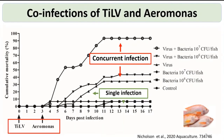In the lab, we took naive fish and challenged them with bacteria alone, virus alone, or together, using different bacterial doses. We challenged the fish with virus first and then bacteria three days later. The single infection groups had considerably lower mortality compared to the co-infection groups, where mortality was very high.